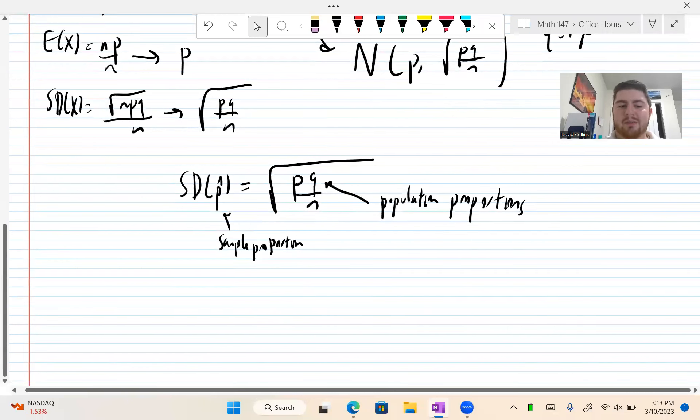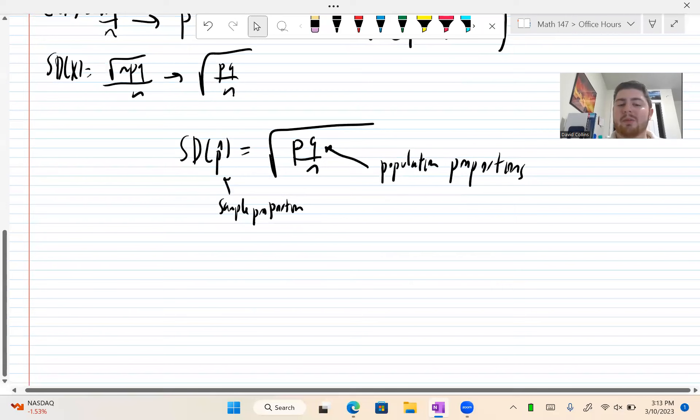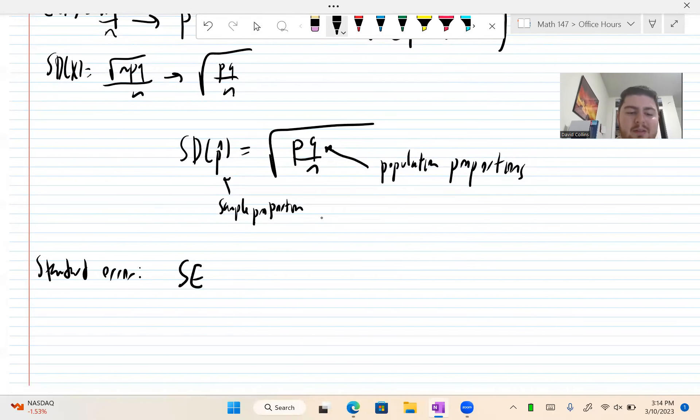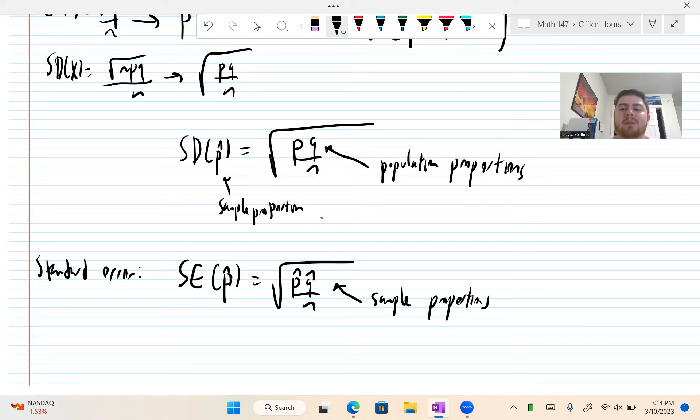If you know population parameters, there's no need for statistics. So while this is nice and all, if we know our population proportion, like how we know every time we flip a coin it's a 50-50 chance to get heads or tails, but in real life this is useless. So we develop the standard error.